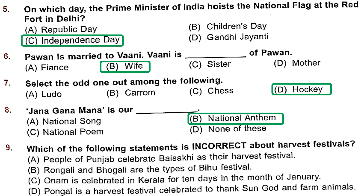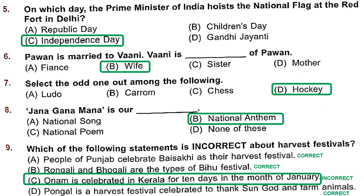Question 9: Which of the following statements is incorrect about harvest festivals? A — People of Punjab celebrate Baisakhi as their harvest festival: absolutely correct. B — Rongali and Bhogali are types of Bihu festival: absolutely correct. C — Onam is celebrated in Kerala for 10 days in the month of January: this is incorrect, because Onam is celebrated in August and September, not January. So the incorrect answer is Option C.